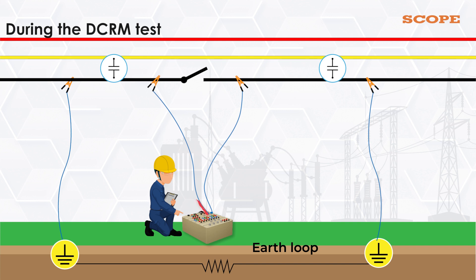During the DCRM test, depending on the resistance of the earth loop, a partial test current will pass through this loop. And for timings, this loop will show permanent closure of CB contacts irrespective of actual CB contact status.